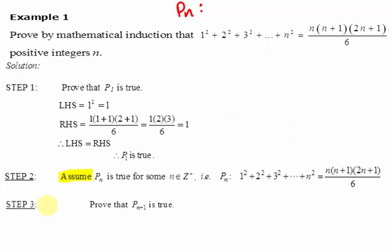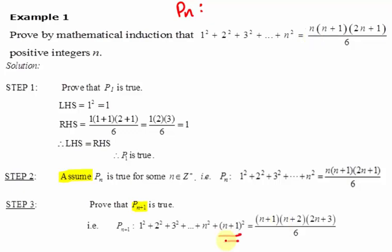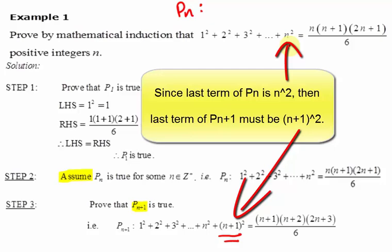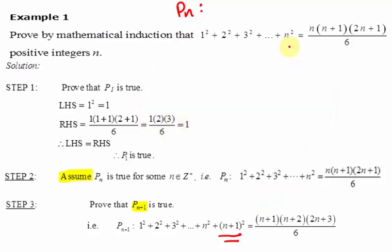The third step, which is the induction step, we need to prove that Pn plus 1 is true. The question is: what is the expression for Pn plus 1? We know that the left-hand side of Pn is this expression, so for Pn plus 1, we need to add one more term. For the right-hand side of Pn, we substitute n by n plus 1. For Pn plus 1, we have one extra term added to the left-hand side of Pn, and on the right-hand side, n is replaced by n plus 1.